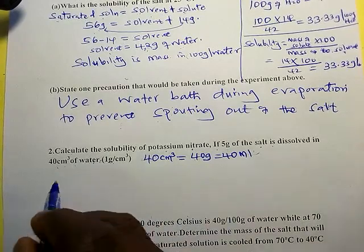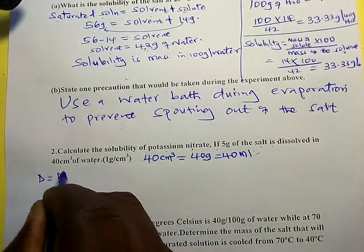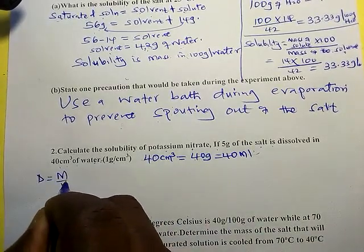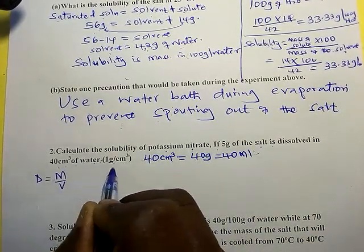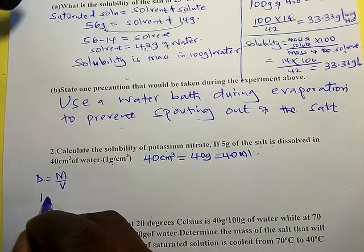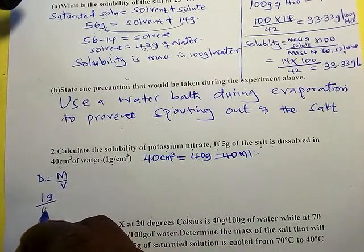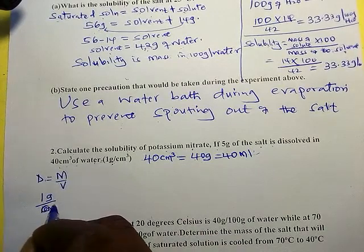Density equals mass over volume. The density of water is 1 gram per centimeter cubed. Substituting: 1 = mass over 40.